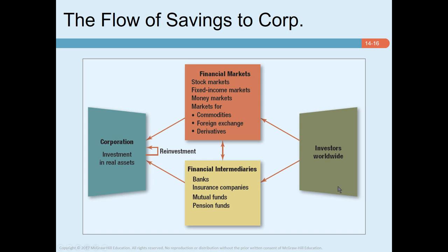In this graph you can see that on the right we have investors who have excess cash to invest. They invest in financial markets, and funds are also channeled to financial intermediaries. It is possible that investors directly invest in financial markets, for example stock markets or money markets.